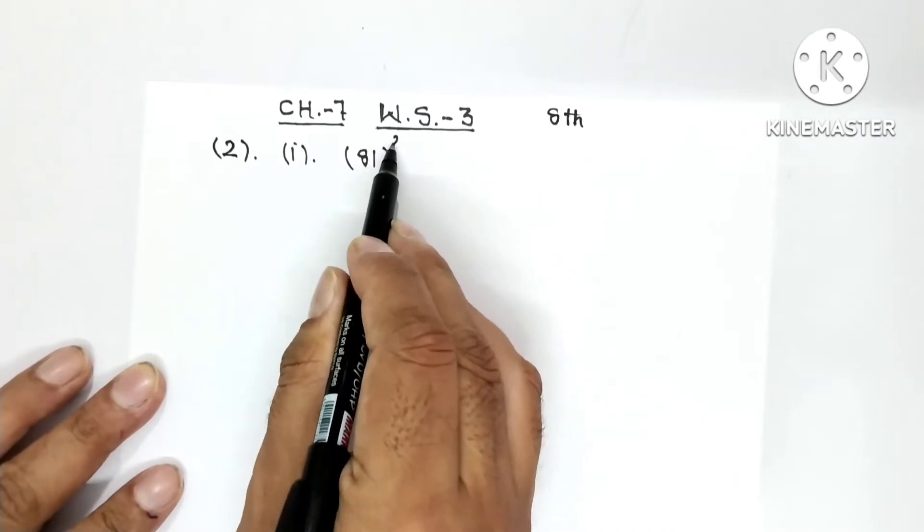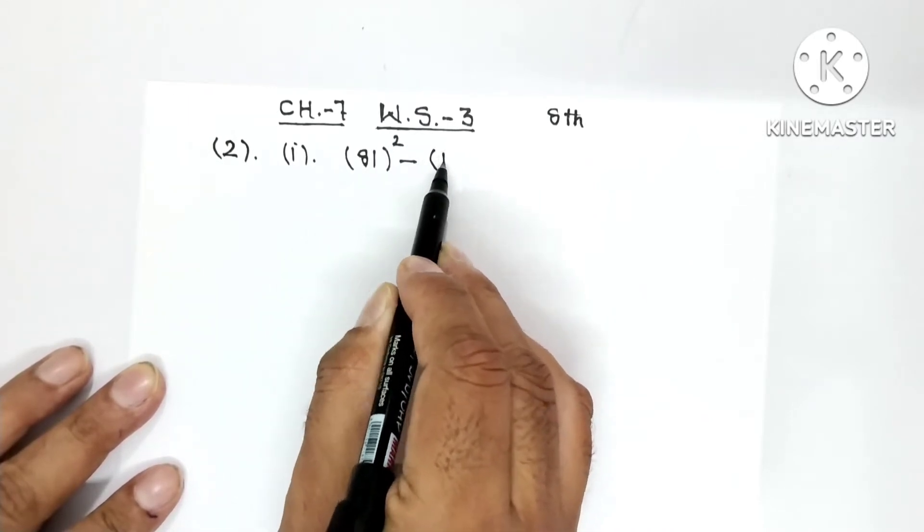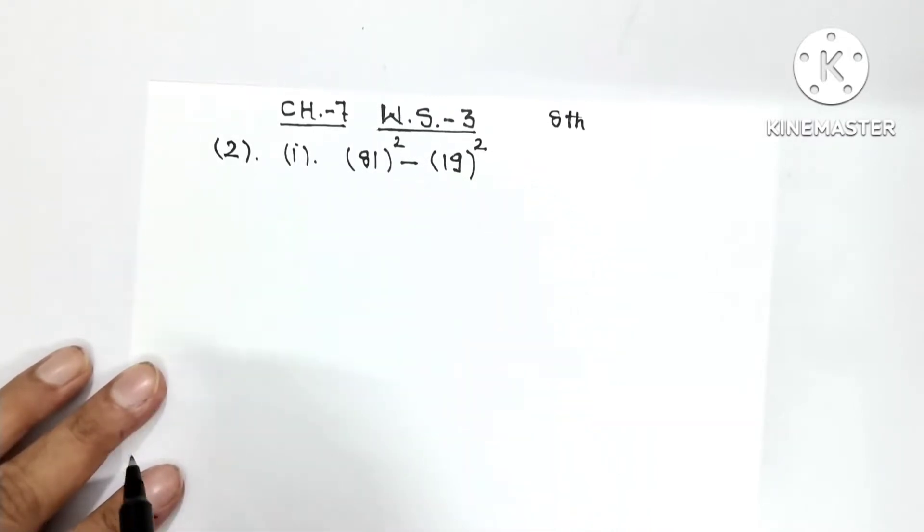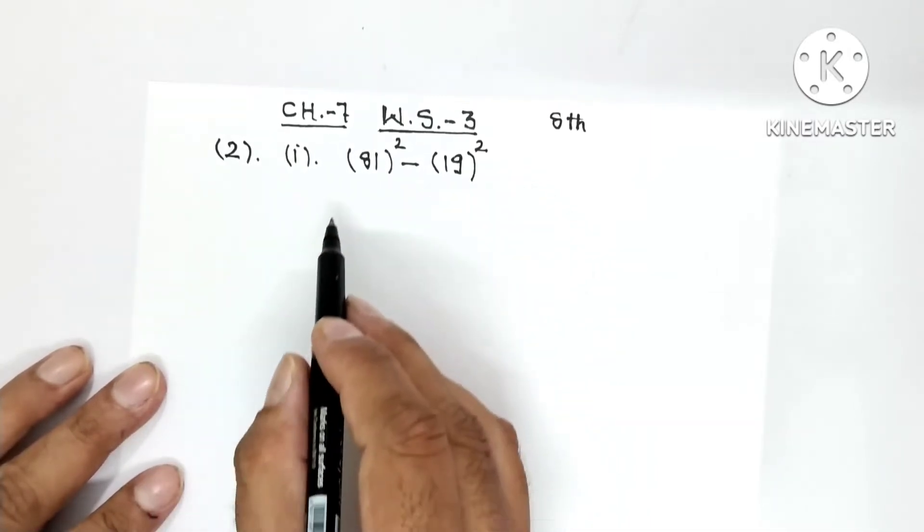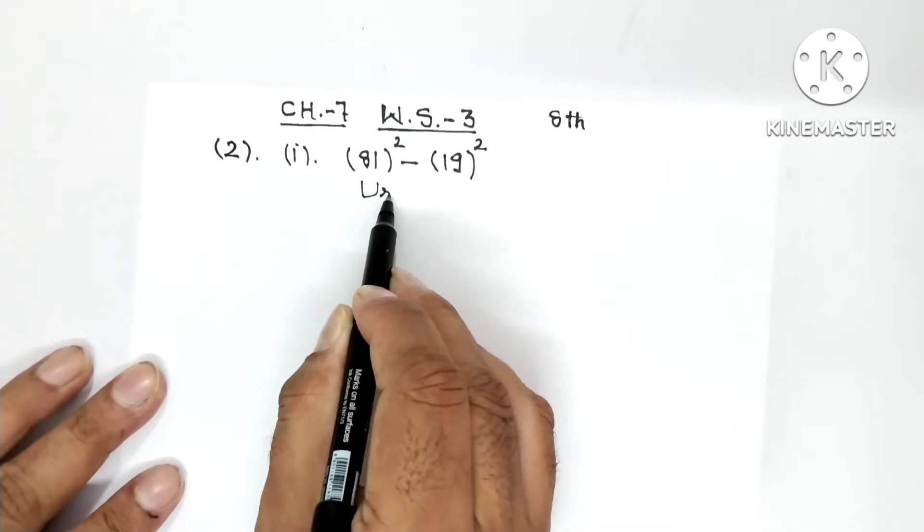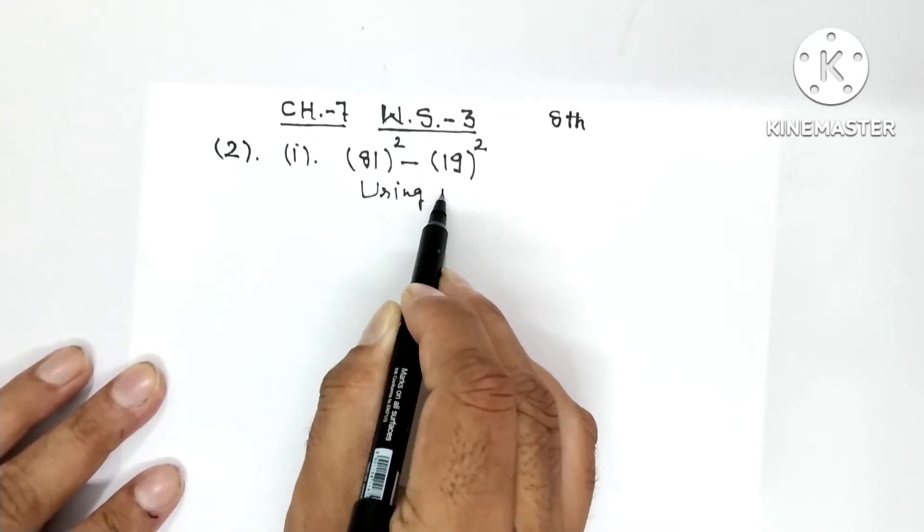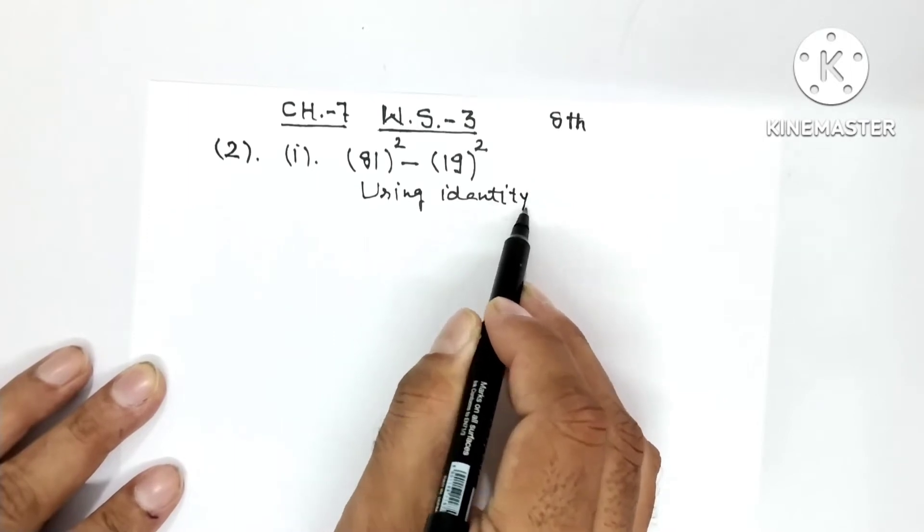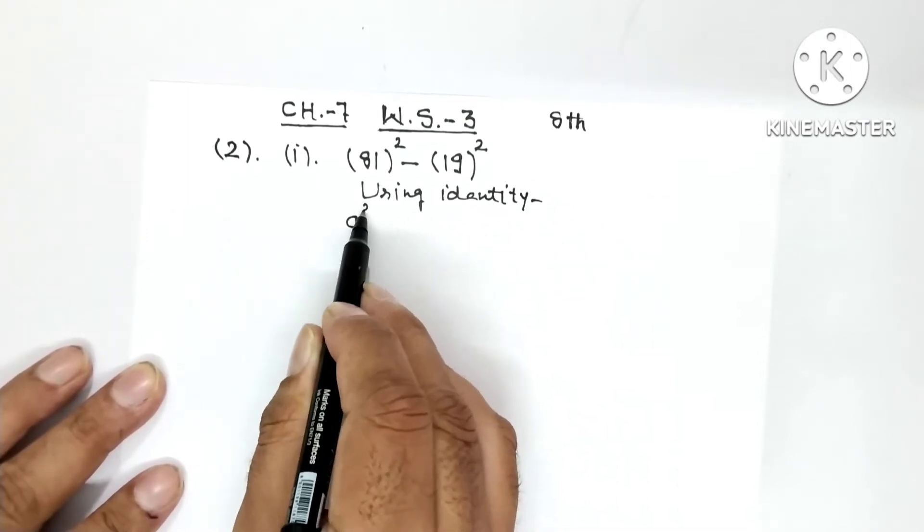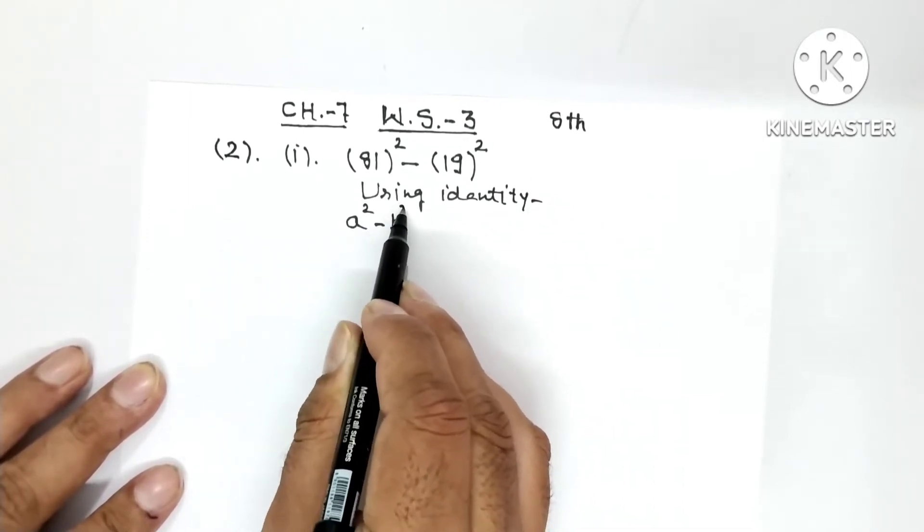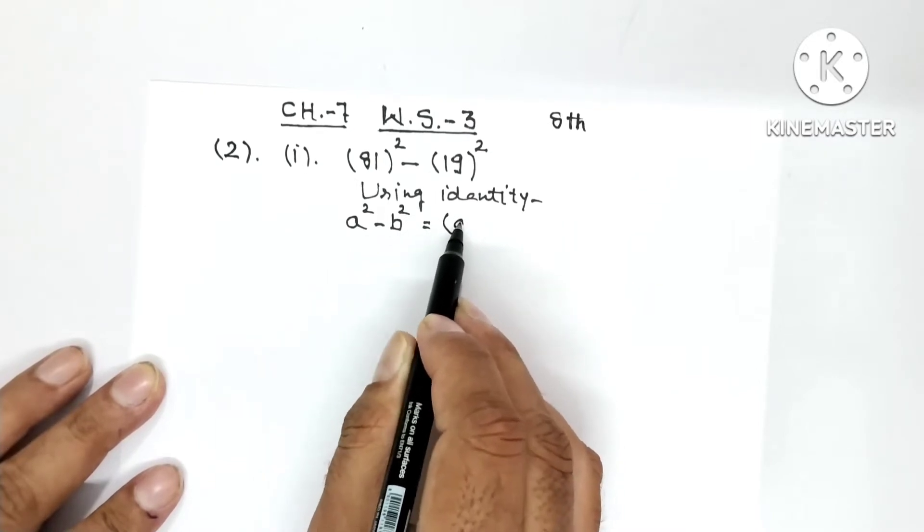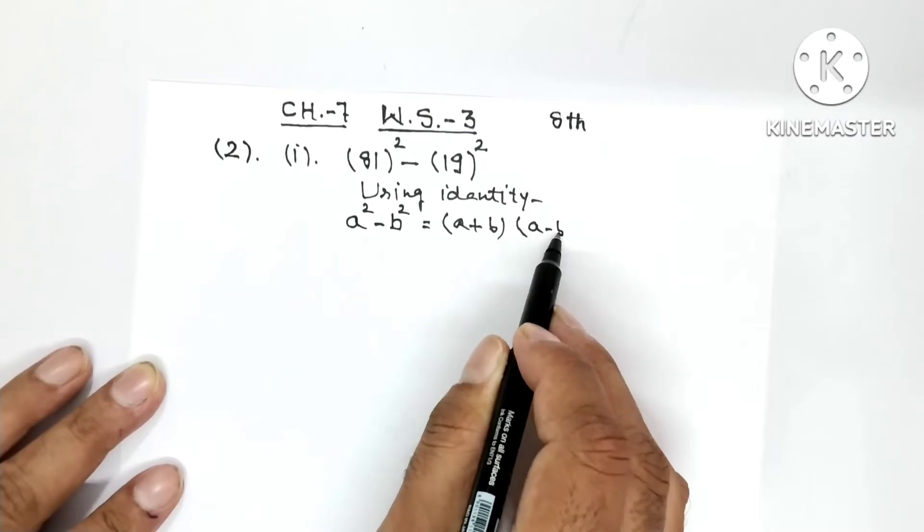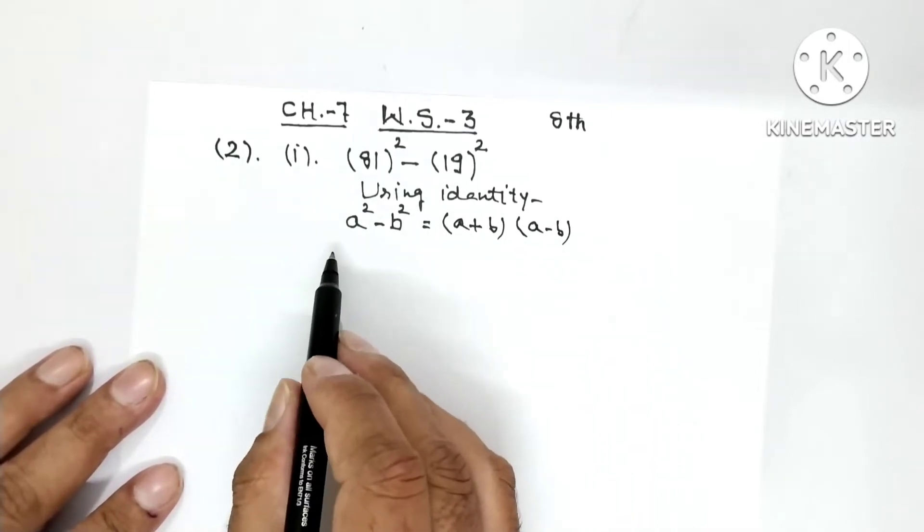81 whole square minus 19 whole square. In place of a, we have 81, and in place of b, we have 19. So you will write, using identity, in the form it is given: a square minus b square is equal to a plus b in one bracket into a minus b in the other bracket.